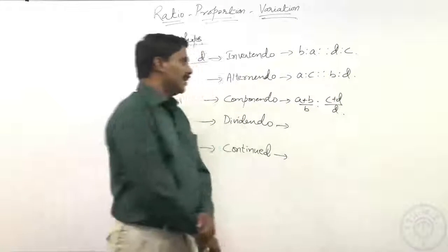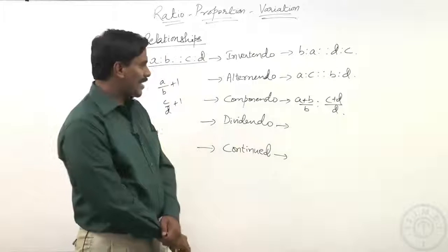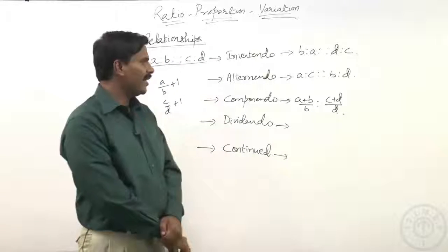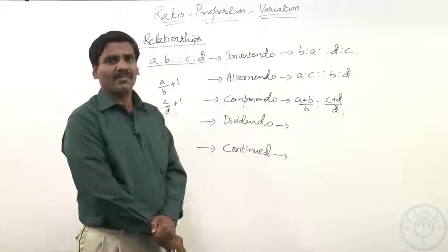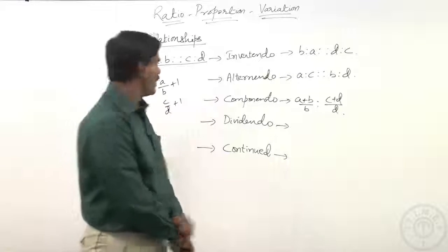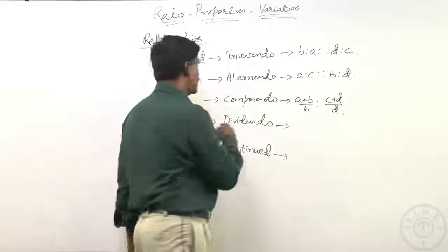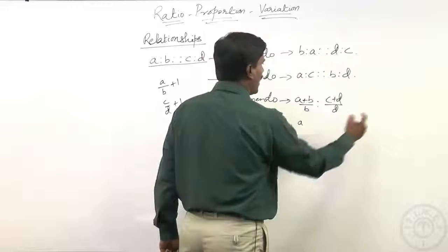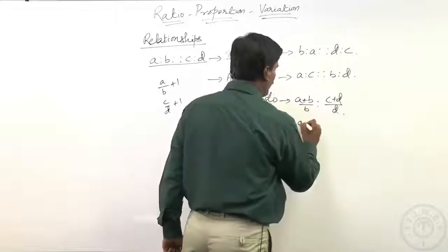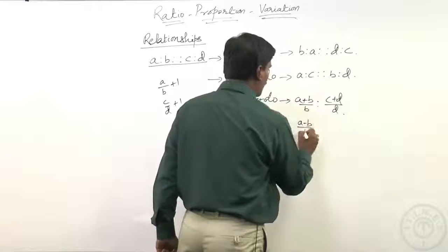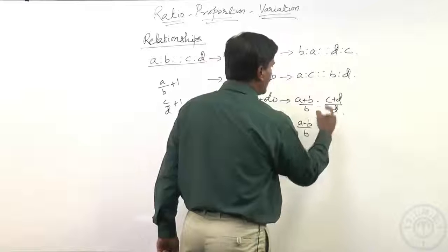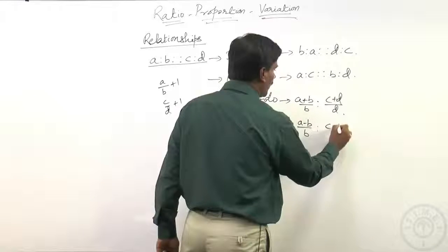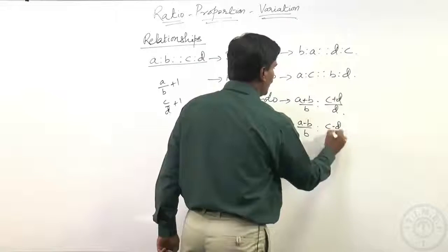Dividendo means subtracting one. So if you consider a by b and subtract one from it, we will be having a by b minus one which becomes a minus b by b. And c by d minus one will become c minus d by d.